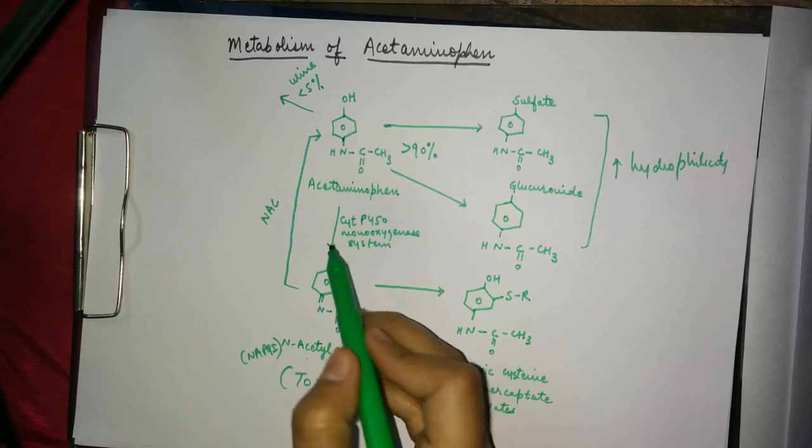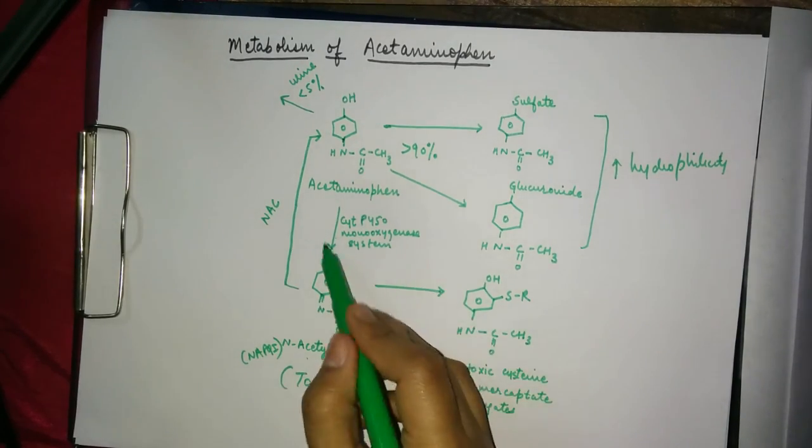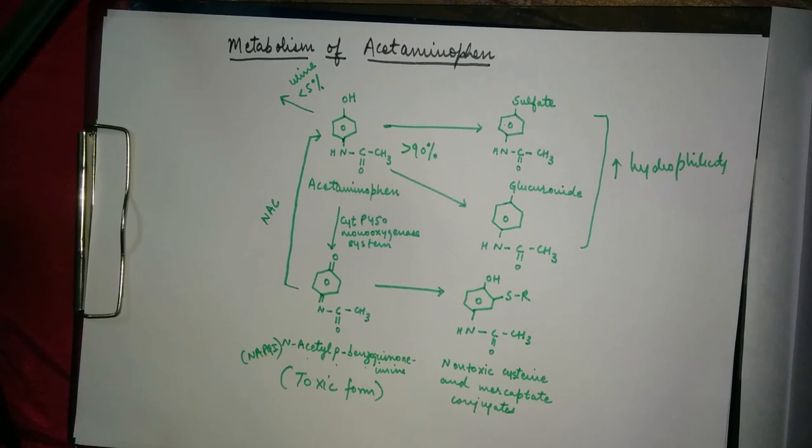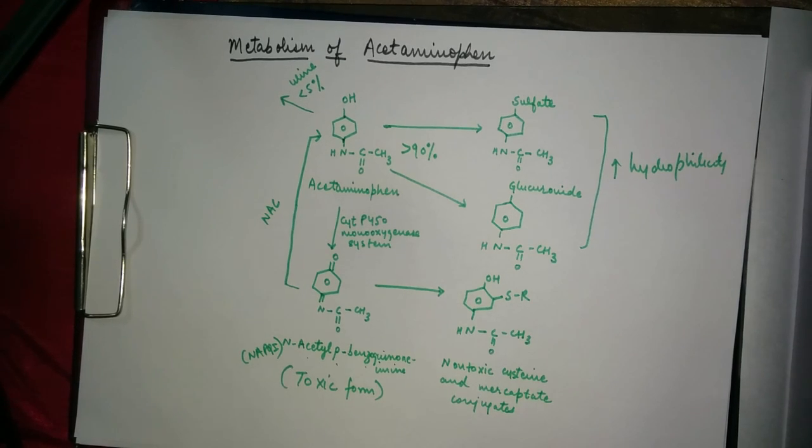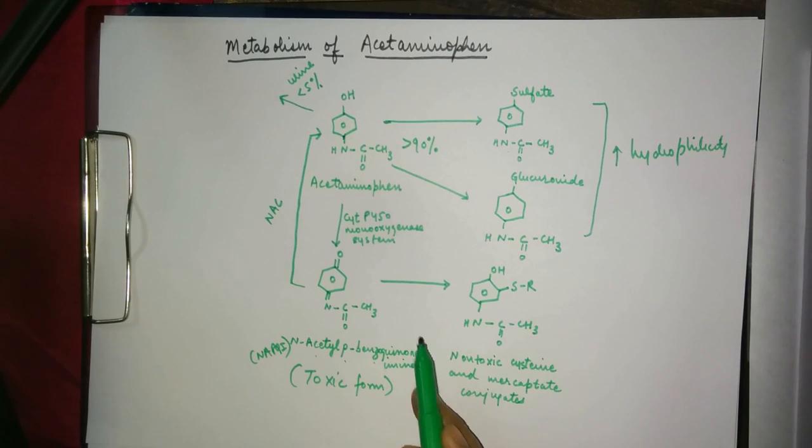This happens through the enzyme cytochrome P450 monooxygenase systems, which are enzyme components of phase 1 reactions. However, this NAPQI combines immediately with glutathione to form a non-toxic mercaptide conjugate which can be eliminated from the body.